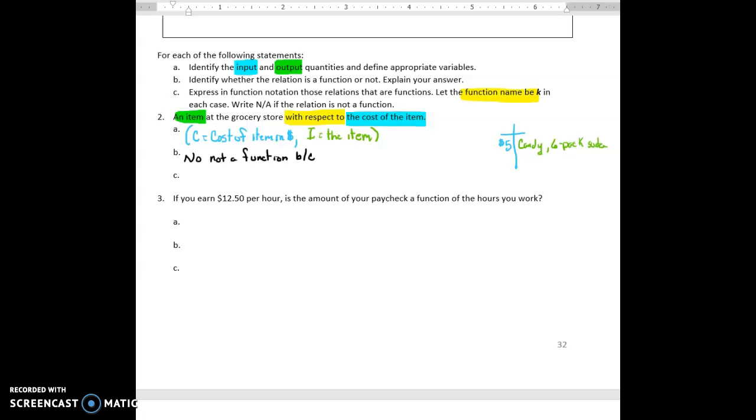Because the cost of an item, the cost may purchase multiple items. Since this is not a function, we're going to say for part C, it says write N/A if that is not. We don't want to leave this blank. We want to make sure we write that it's not applicable because we don't have a function. So we can't write it in function notation.